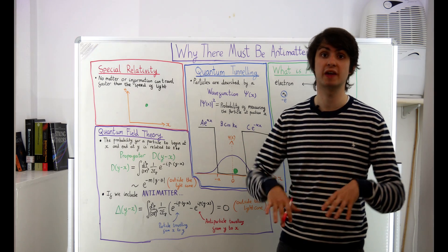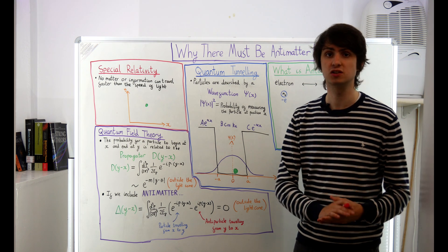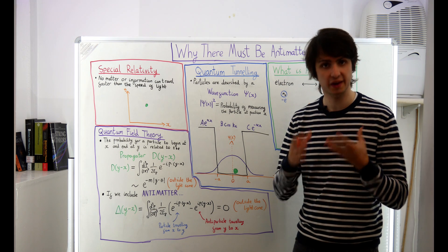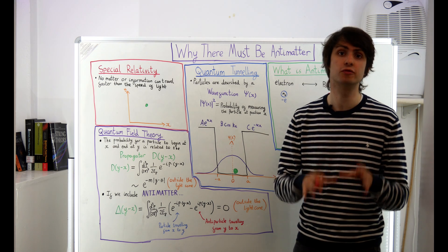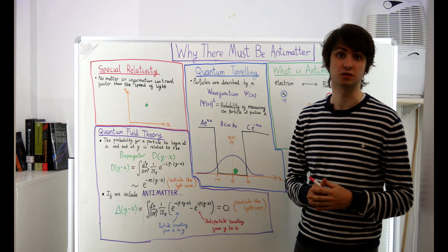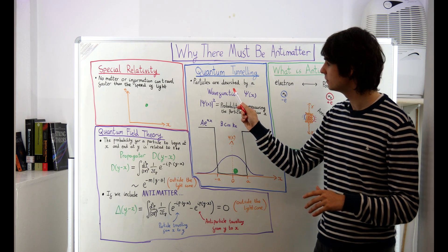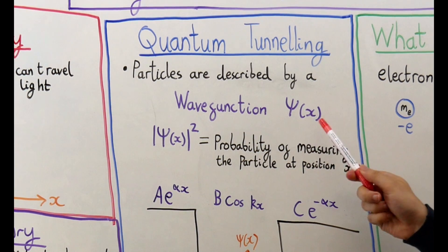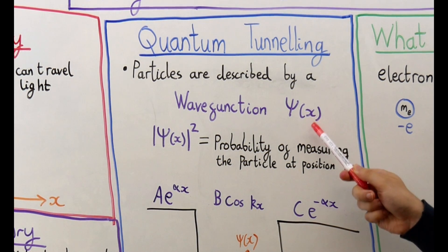Our story starts with a weird quantum effect called quantum tunneling. What is quantum tunneling? Well in quantum mechanics the things that you end up calculating are always probabilities. Particles don't have well-defined positions and velocities like they do in classical physics. Instead quantum particles are described by something called a wave function. The wave function of a particle tells you the probability of measuring that particle to be in a particular location x.